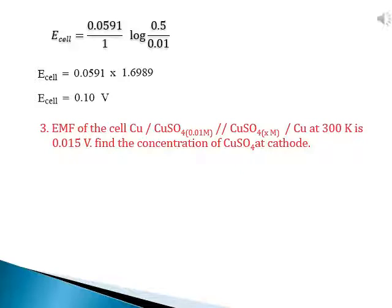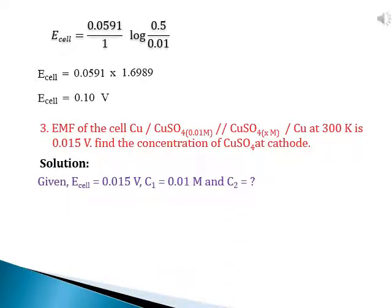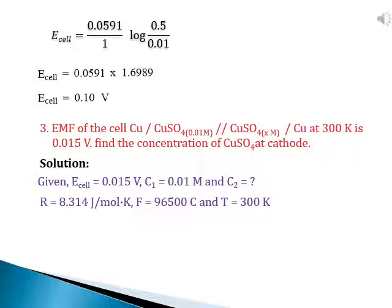Third problem: EMF of the cell Cu | CuSO4 (0.01 M) || CuSO4 (X M) | Cu at 300 K is 0.015 volt. Find the concentration of CuSO4 at cathode. Given: E_cell = 0.015 volt, C1 = 0.01 moles, R = 8.314 joules per mole per kelvin, F = 96,500 coulombs, and T = 300 kelvin.